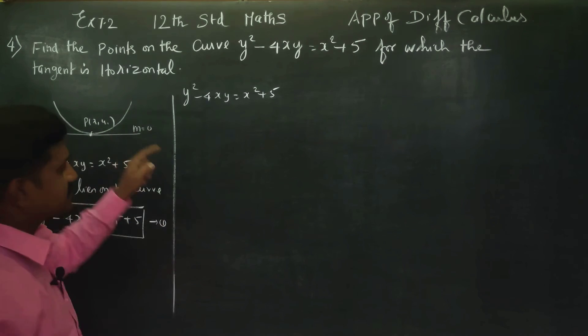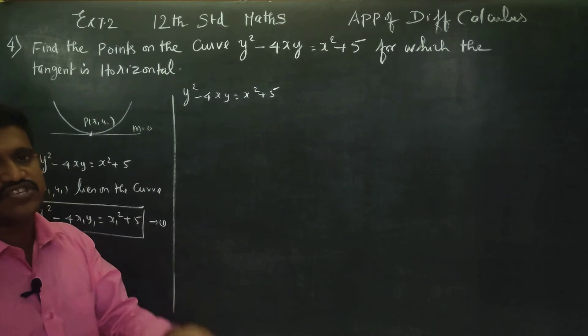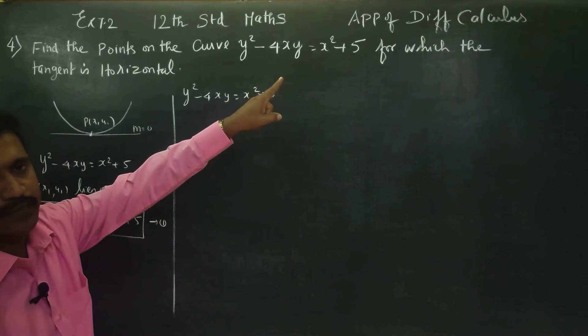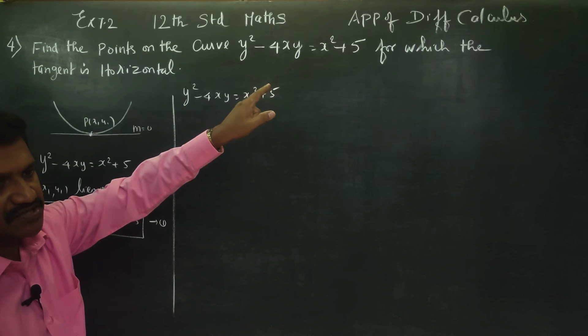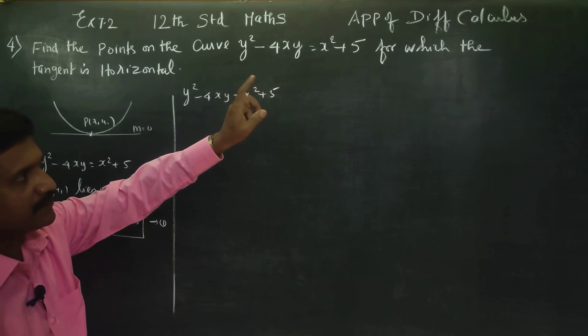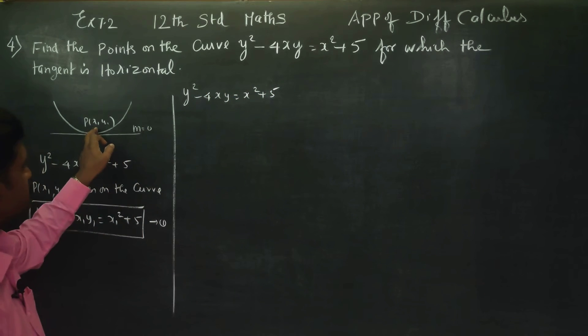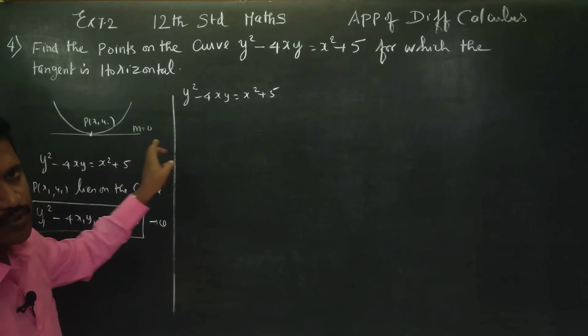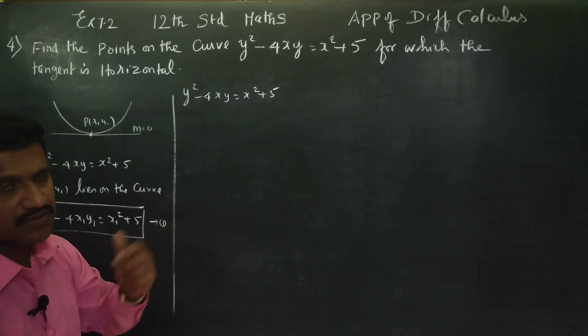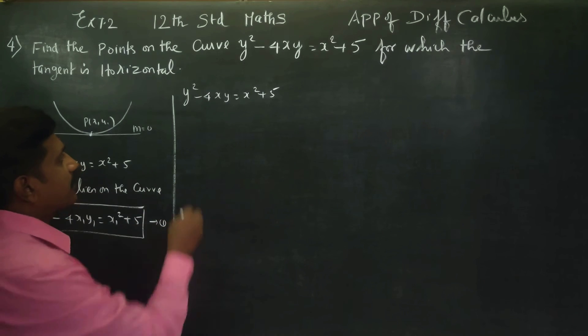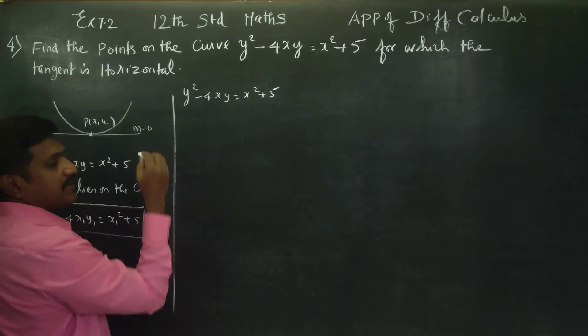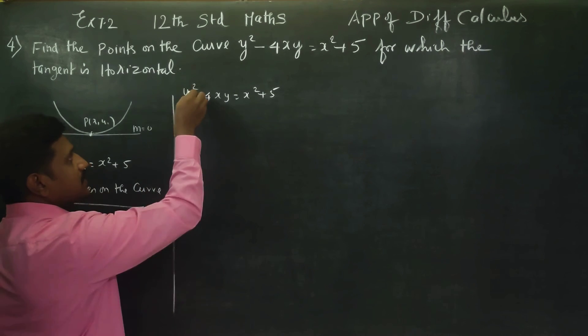Now, for the slope of the tangent, we differentiate the curve equation. If we differentiate with respect to x at the point, we get the slope of the tangent. So we are going to find dy by dx.